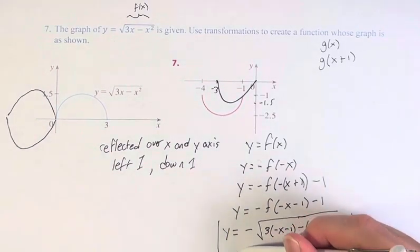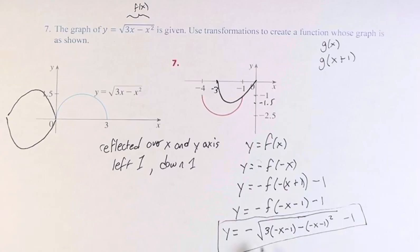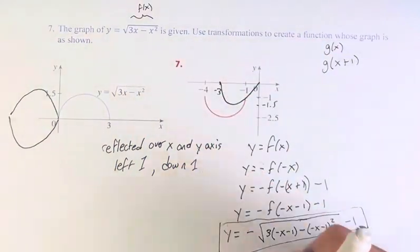And this is your function. You can simplify it if you want, but it's not really necessary. This is the function which has this graph based on the fact that we know that this graph has this function.